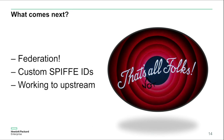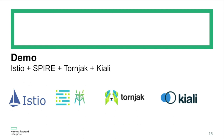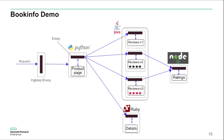Now it's time for the exciting part of our presentation: the demo of Istio and Spire working together. Today we're going to be showing Istio and Spire, but also Tornjak — which is the user interface for Spire that's under development — and Kiali, which is the user interface for Istio. The application we'll be demonstrating is called BookInfo, the built-in Istio demo app. It consists of a product page in Python, a reviews page in Java, a details page in Ruby, and a ratings service in Node.js. There are three instances of the reviews page, so each time you refresh you'll see a different review. Each service gets an Envoy sidecar proxy, and because we're using Istio-Spire, each sidecar will be getting its identity from Spire.